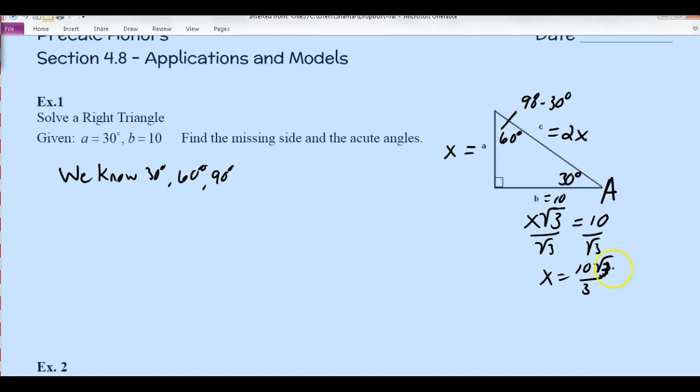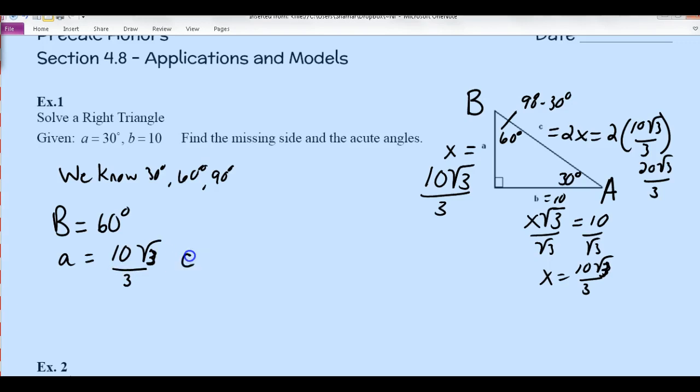So now if x is 10 root 3 over 3, I can put that on the side a, and then I just need to double that value to get the hypotenuse. So 2 times 10 root 3 over 3, which makes 20 root 3 over 3. So we have angle B is the one that's opposite side B, and that was 60 degrees, and side A was the one across from the smallest angle, so it was the smallest side, and side C, which was the hypotenuse, was double side A, and we already knew side B.